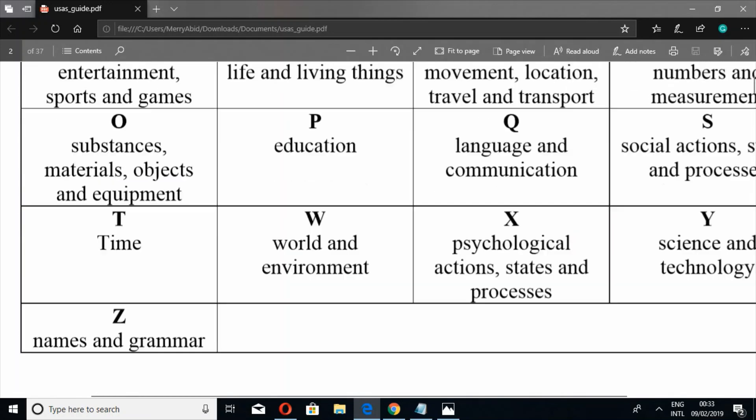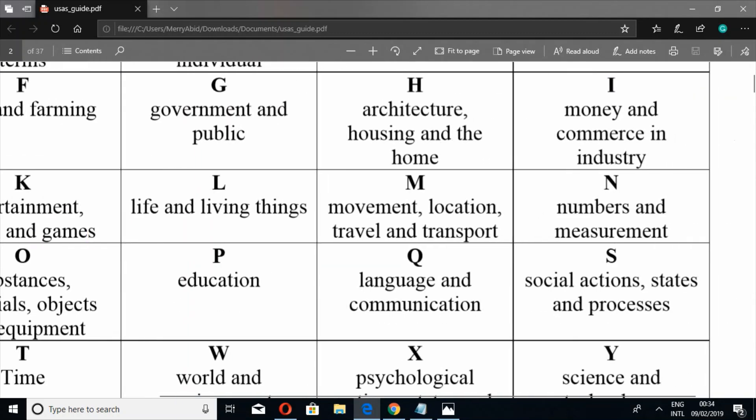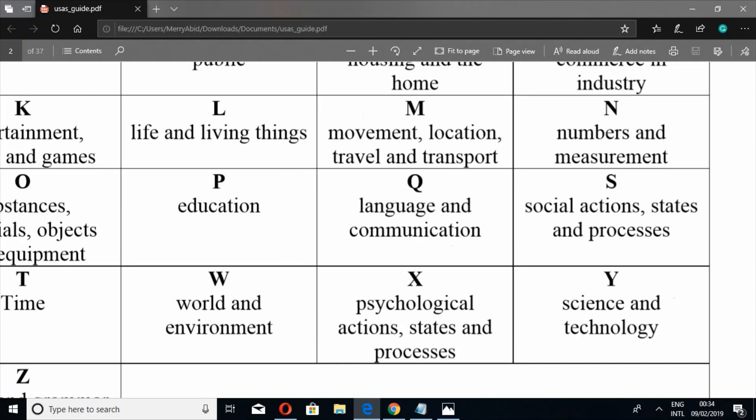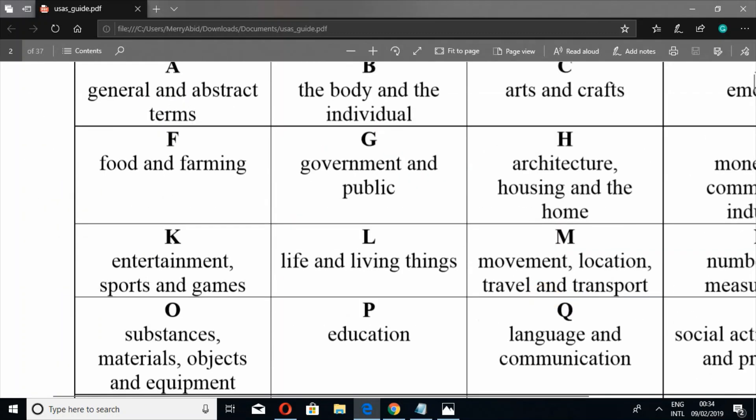Go further down. Here again is the visual representation. If we could see, M is for movement, location, travel, and transport, and one of the tags was M4. It is used for transport. I think this sense is correct because when weapons are transported, M4 is used. If you look at S2 or S7, these are the social action, states, and processes. Surely admiral is also a social action; admiral is also performing a social action.